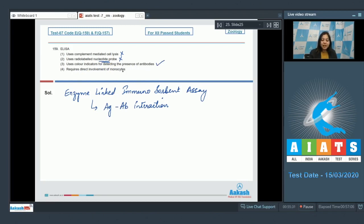Number four, requires direct involvement of monocytes. This is also an incorrect statement as monocytes are phagocytic cells and are involved in innate immunity. So the correct answer for ELISA is option number three.